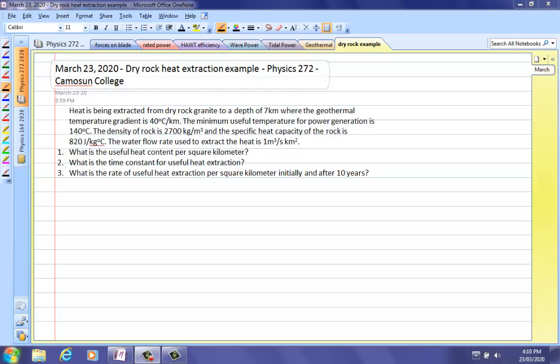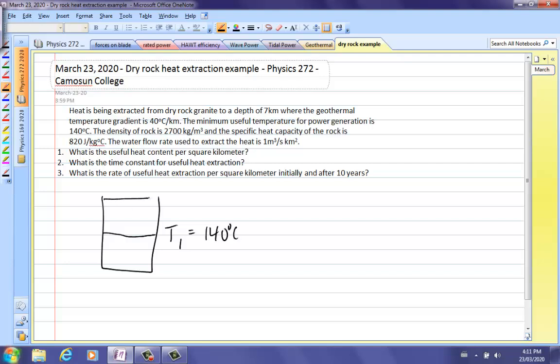The first thing we have to find out is how deep is that minimum useful temperature, and so what range of depths are we working from here. Remember the minimum useful temperature is T1, and we know that's 140 degrees Celsius. This is the surface, and we need to know Z1. We've got Z2. Z2 is 7 kilometers.